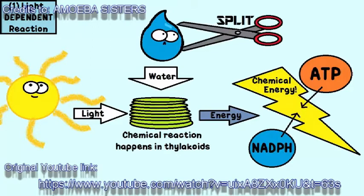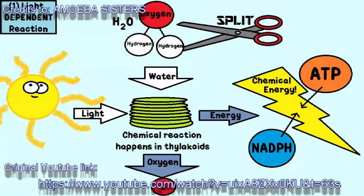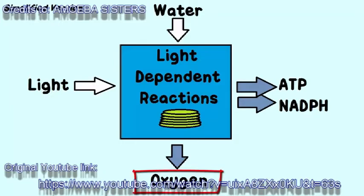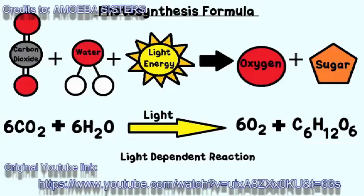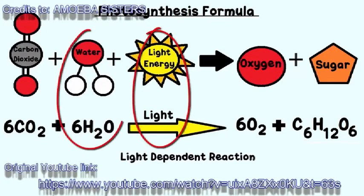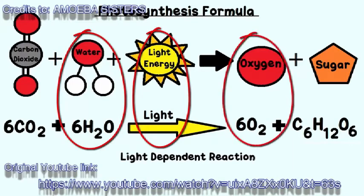During the light-dependent reaction, water, which is needed for this process to work, is split. That means, if you think of the chemical formula for water — H2O — it is split so that you get electrons, protons, and oxygen. So oxygen is also a product of this reaction. So let's take a look at our formula to see what just happened. The light and the water on the reactant side were used in the light-dependent reaction, and the oxygen that was produced was also from this light-dependent reaction.